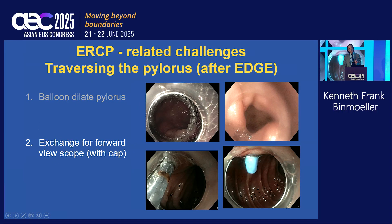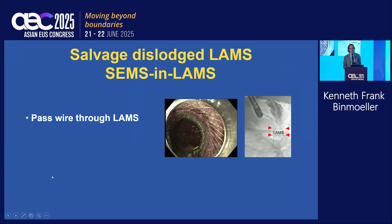The other option is to exchange the duodenoscope for a forward-viewing scope, but you must add a cap. Here you can see insertion of the forward-viewing scope across the LAMS and crossing the pylorus. The cap is extremely helpful — I think essential — to be able to access the papilla and place a stent for drainage.